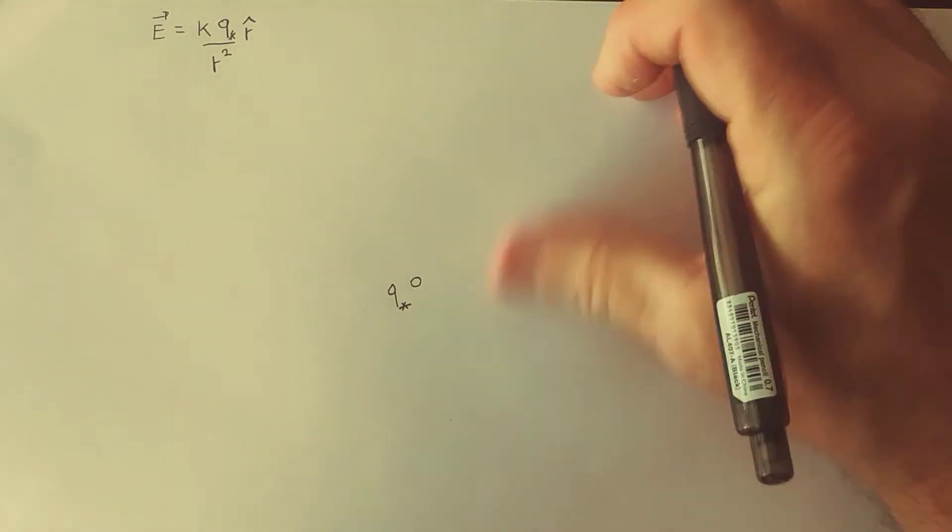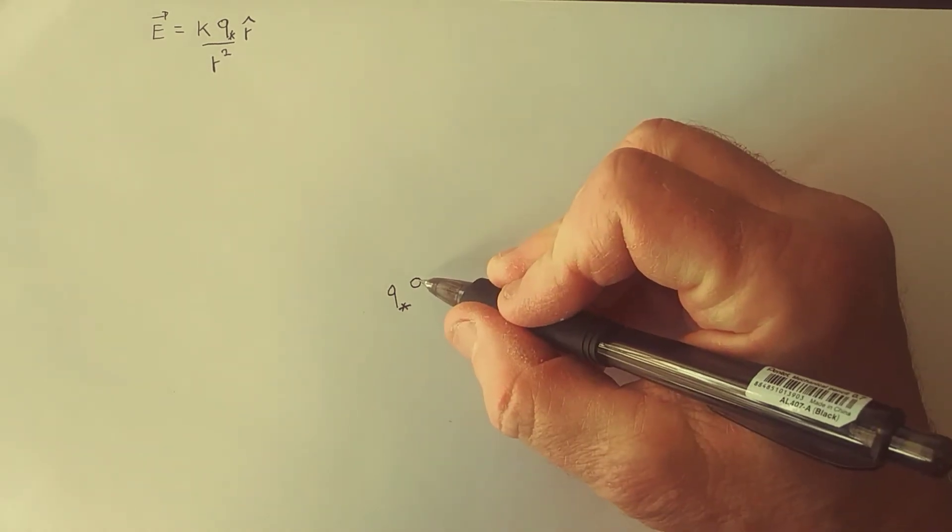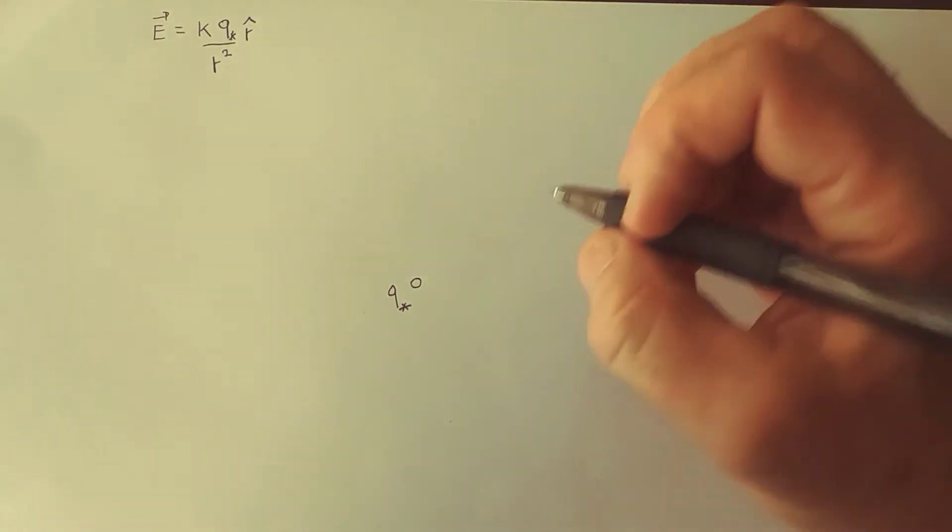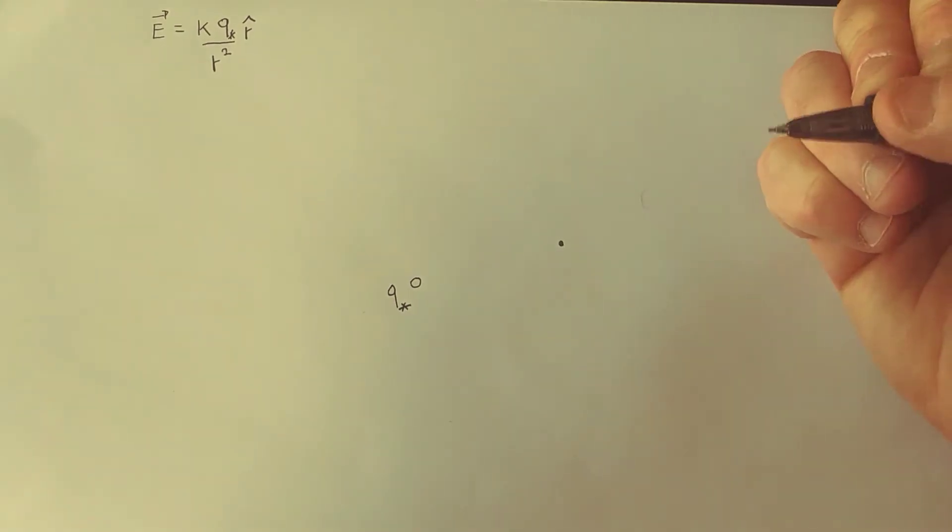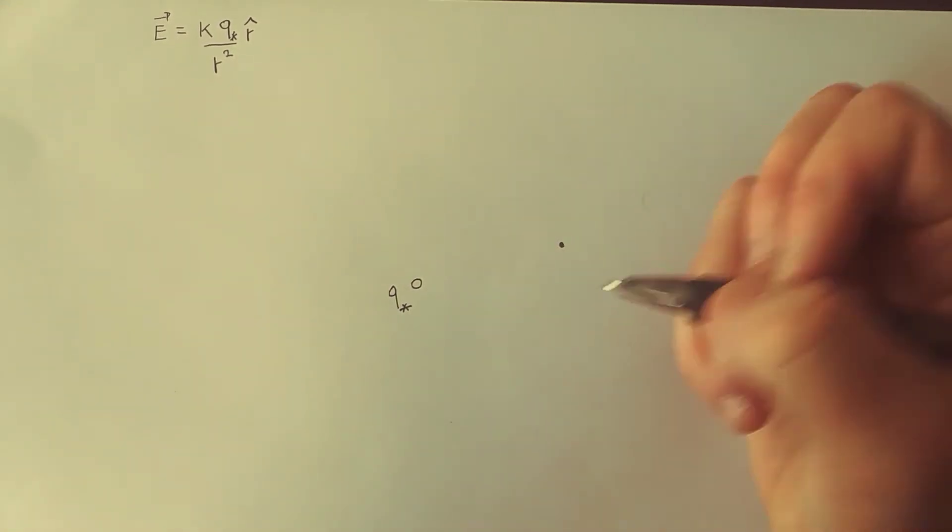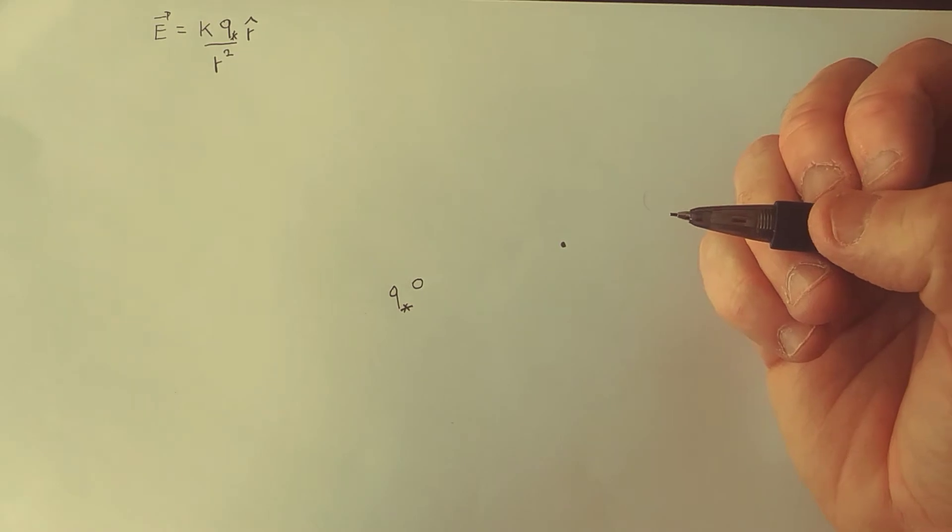Let's say that we want to find the unit vector at some location right there. So what I want to emphasize is that all that's involved here is Pythagoras theorem.